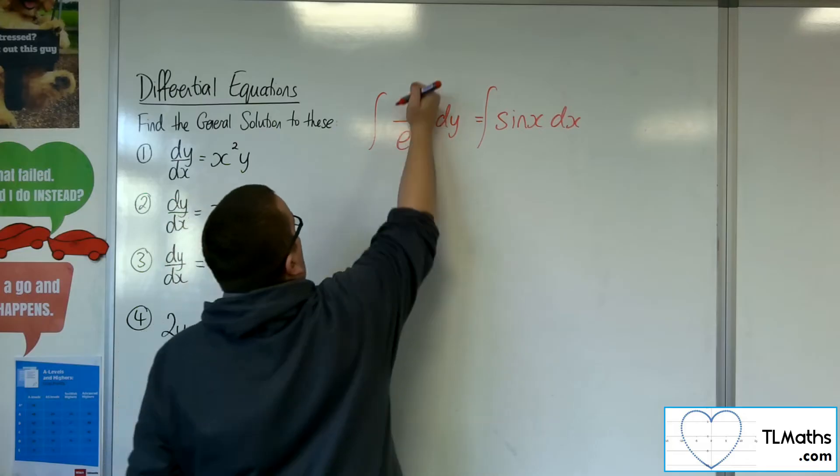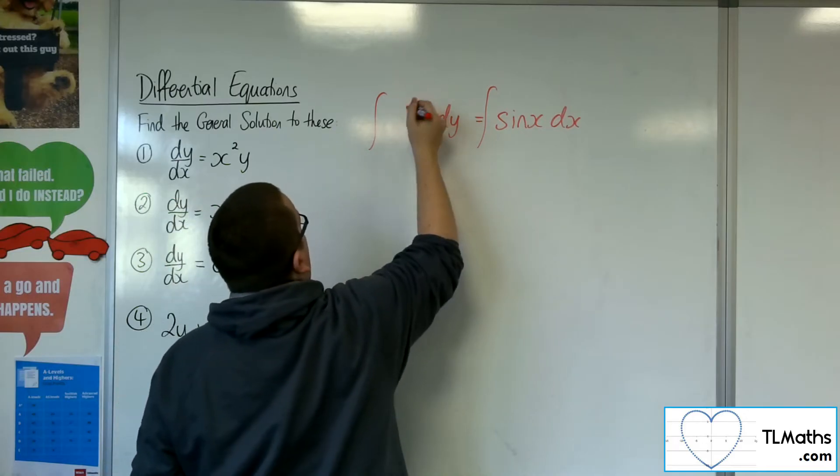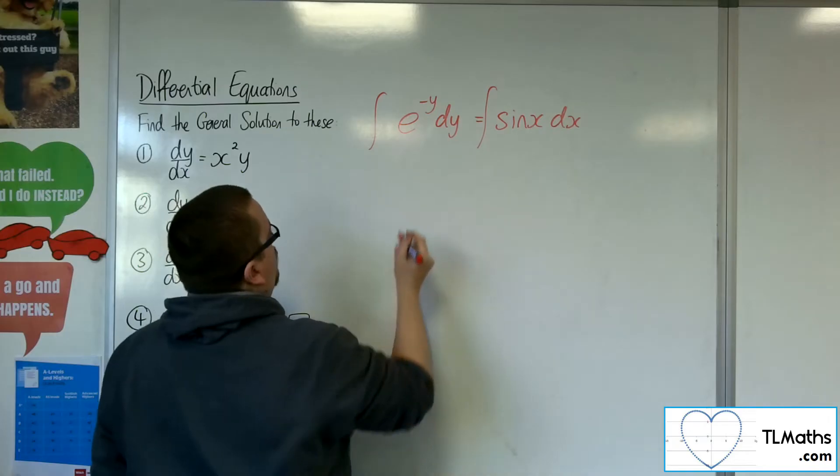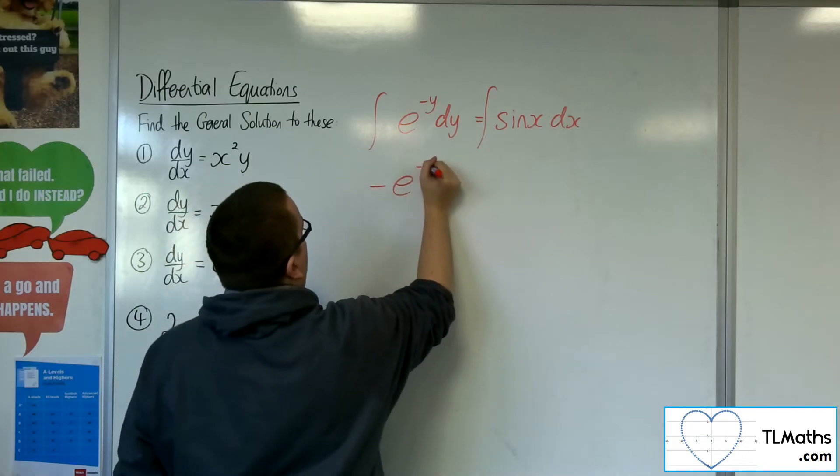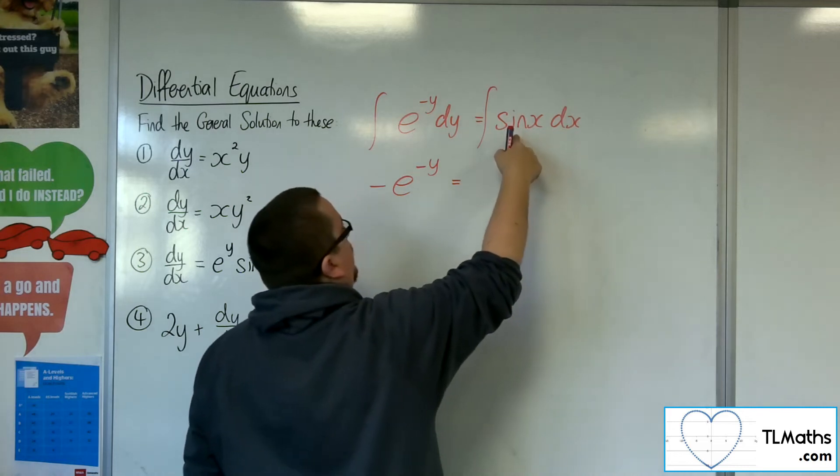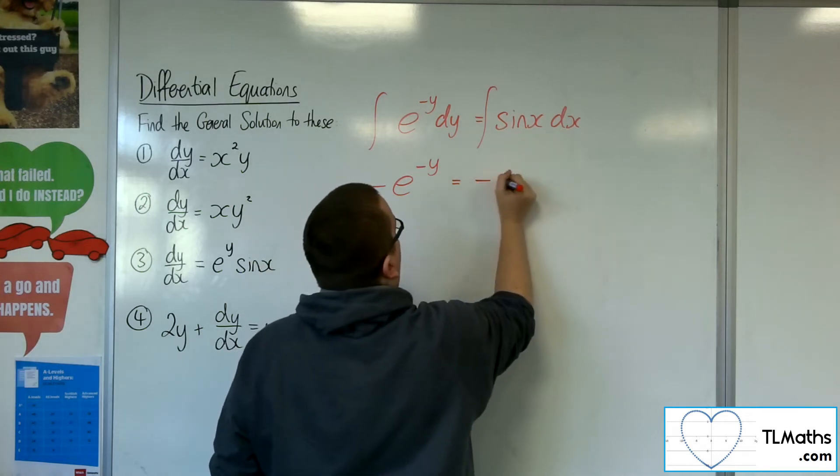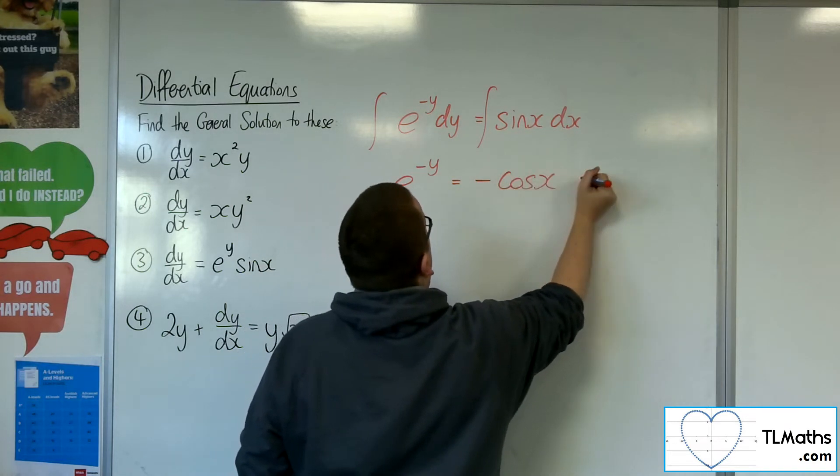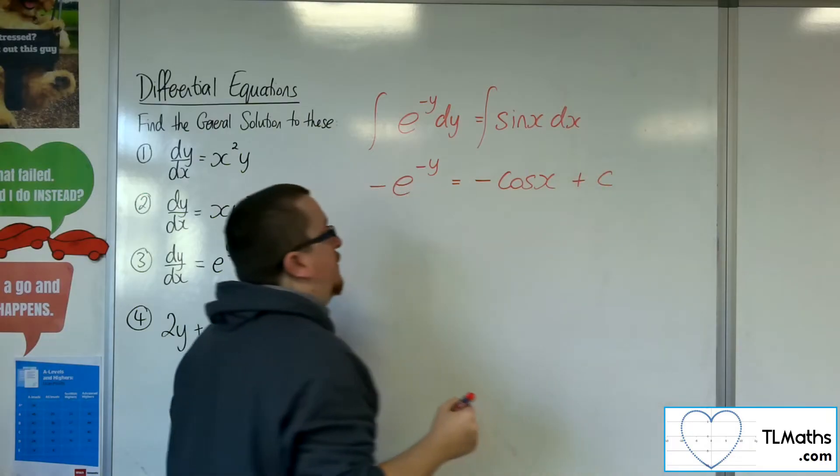Now, this is e to the minus y. So in integrating, I'm going to get minus e to the minus y is equal to, well, sine x integrates to minus cosine of x, and I've got my plus c constant of integration.